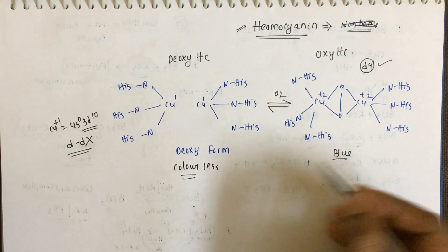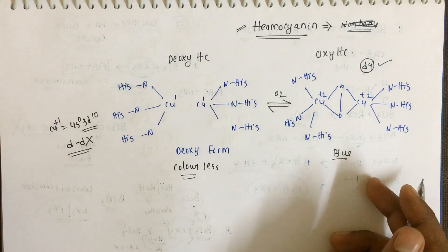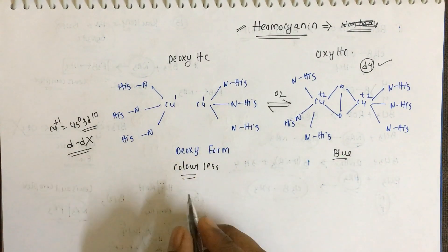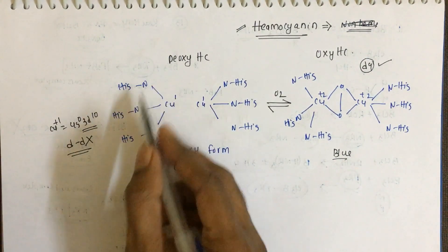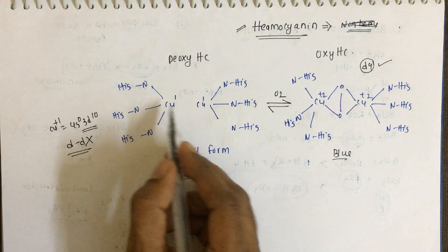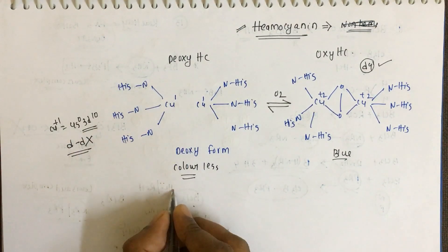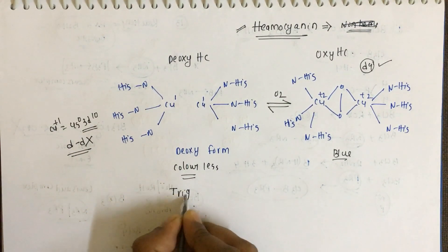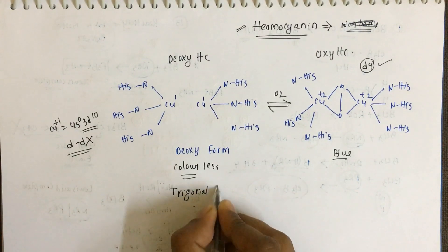Because of the d-d transition, we get a blue color in the oxy form. Another thing to note about the shape of this compound — it looks like a trigonal planar shape.